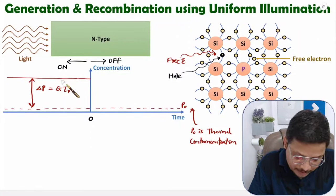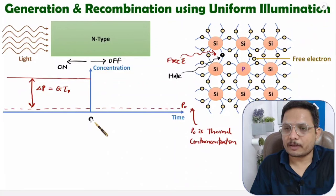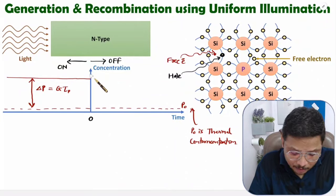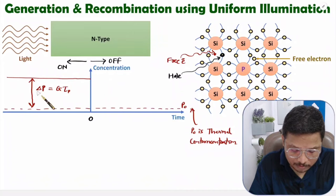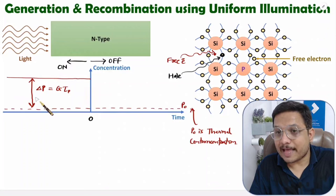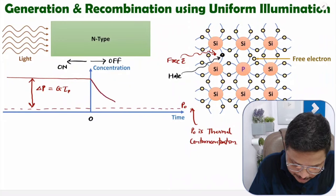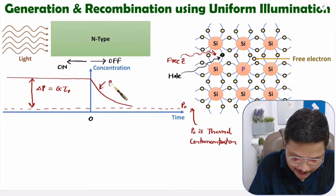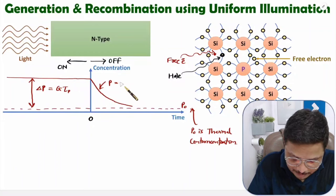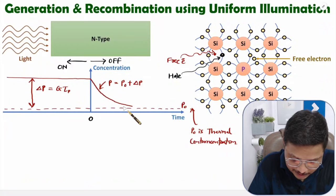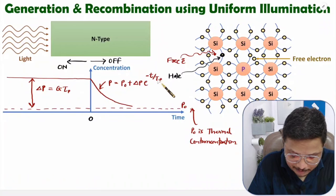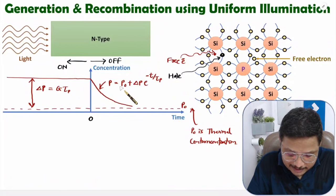This delta P is constant while light is on, up to t equals zero. But as we turn off the light at t equals zero, this concentration will start to decay — and that decay will be exponential. So the total concentration P equals P0 plus delta P times e to the power of minus t divided by Tp, where Tp is the lifetime of holes. That is how this exponential decay occurs.